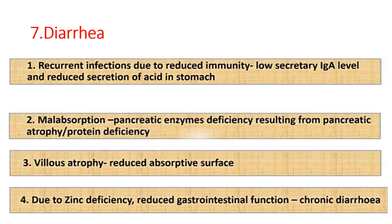Diarrhea is common in malnutrition due to recurrent infection from reduced immunity. There is low secretory IgA level and reduced secretion of acid in the stomach, predisposing to diarrhea. Malabsorption due to pancreatic enzyme deficiency from pancreatic atrophy, protein deficiency, and villus atrophy causes reduced absorptive surface. Zinc deficiency also causes diarrhea and reduced gastrointestinal function, predisposing to persistence of diarrhea.